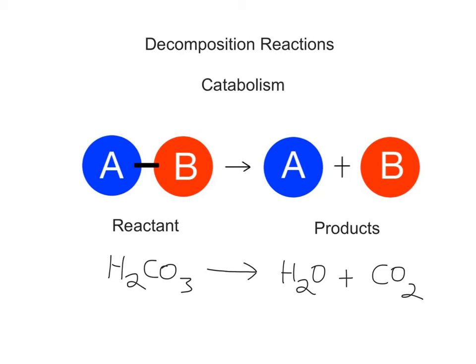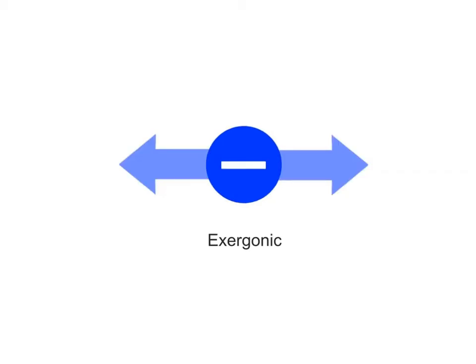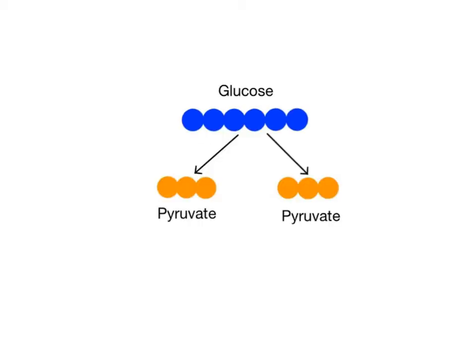All of the decomposition reactions taking place in the body make up the body's catabolism. The prefix cata means to tear down, and you've seen it used in words like catastrophe or cataclysm to describe disasters or any type of destructive event. Catabolic reactions are usually exergonic because they release more energy into the surrounding environment than they absorb. An example of an important catabolic reaction in the body is the breakdown of glucose, a six-carbon sugar, into two three-carbon molecules of pyruvic acid, also called pyruvate — part of the early stages of cellular respiration that produces chemical energy in the form of ATP.